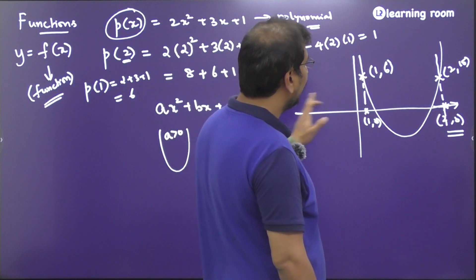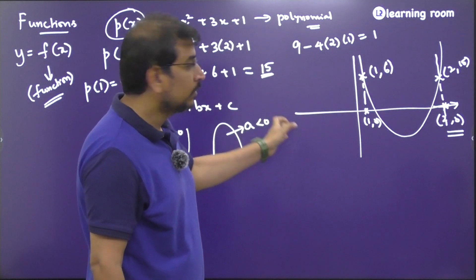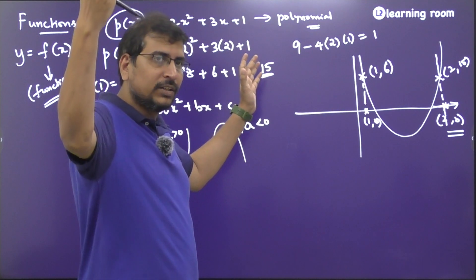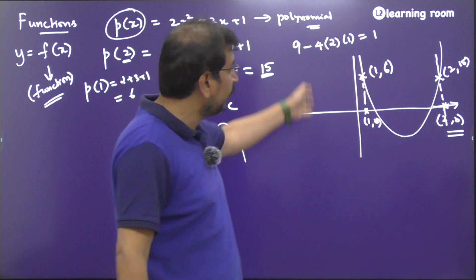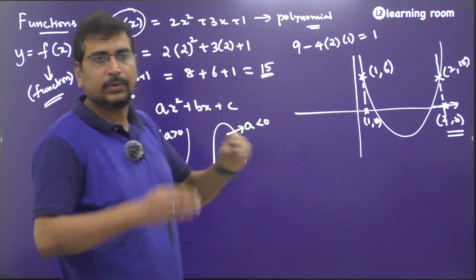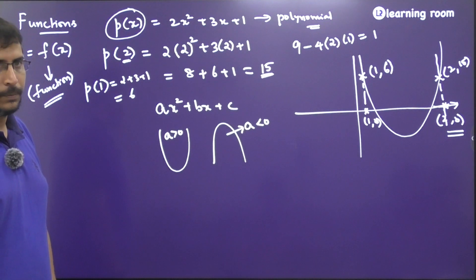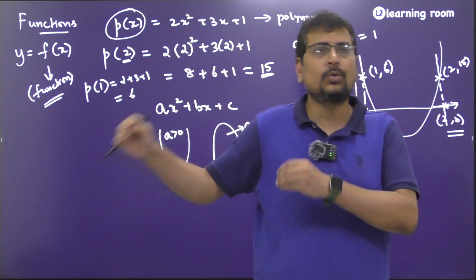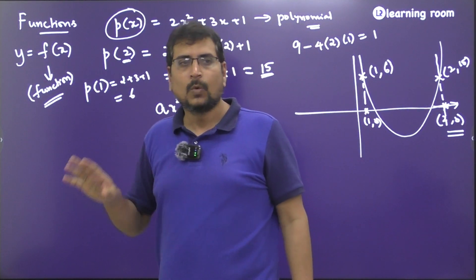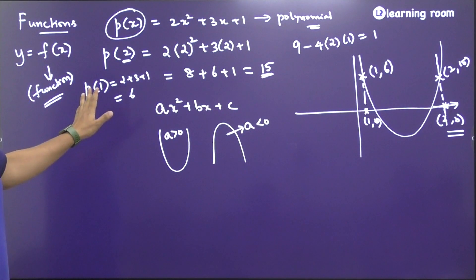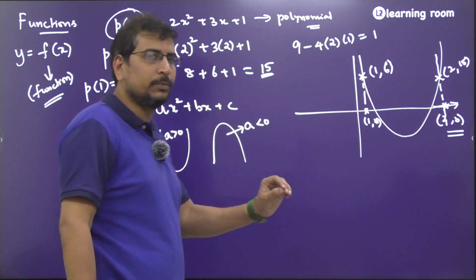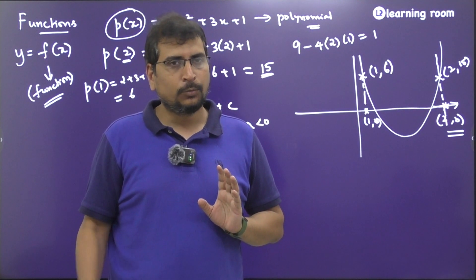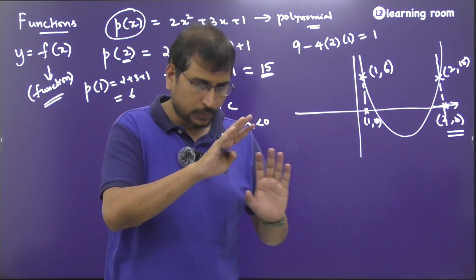The least value you can substitute for x on the real number line is minus infinity. When you substitute minus infinity, the output goes to plus infinity because squaring a very large number makes it even larger. That is why the parabola has no endpoints. In y = f(x), y is called the dependent variable and x is called the independent variable. We call x independent because we are free to substitute any value for it.